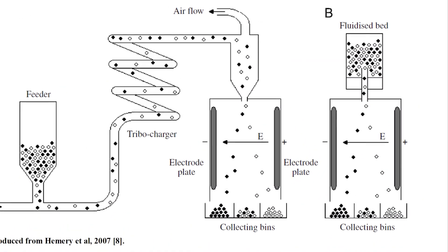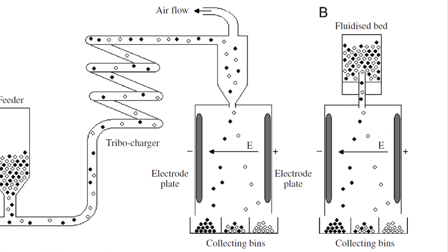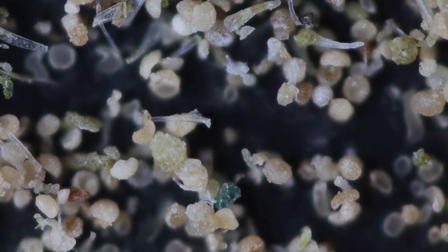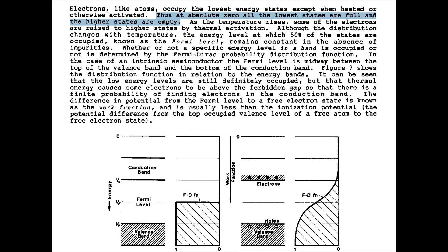Temperature can affect particle behavior in many ways, and its effects can vary depending on the type of particle and the conditions of the electric field. One effect of temperature on particle separation is the distribution of charges on the particles. At higher temperatures, the charge distribution on particles can become more uneven. This can cause particles to have a weaker overall charge or have areas of the particle with the same charge. As a result, particles may not separate as effectively when placed in an electric field.